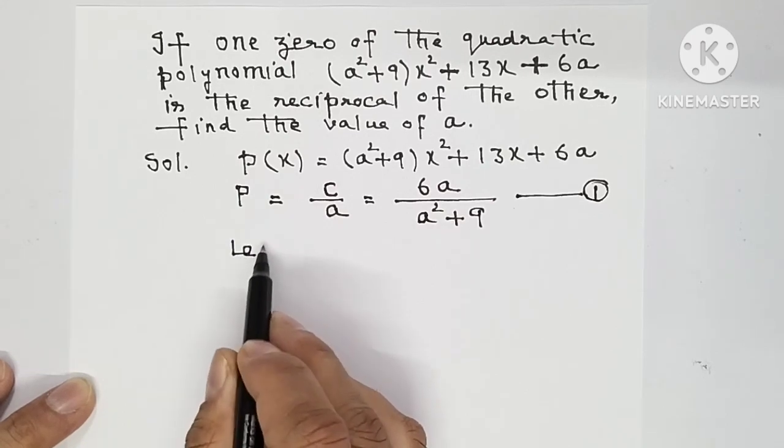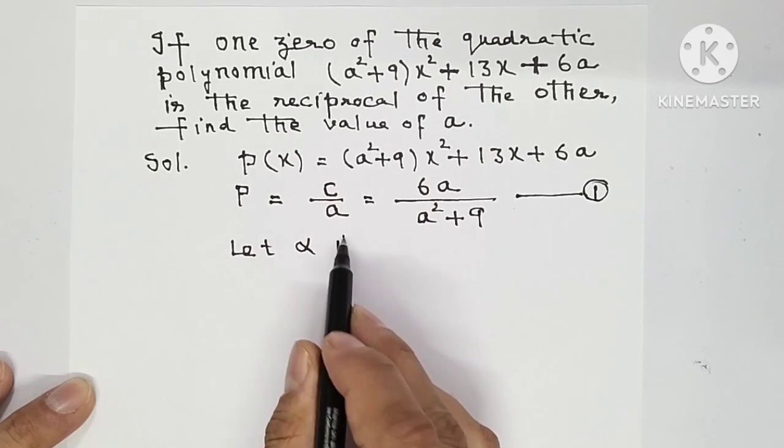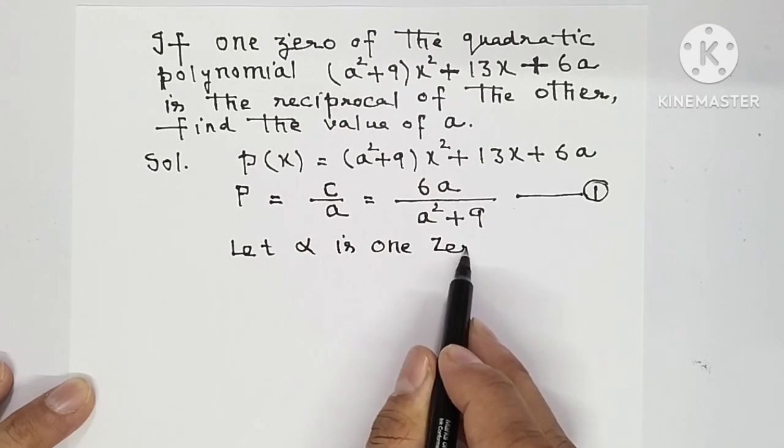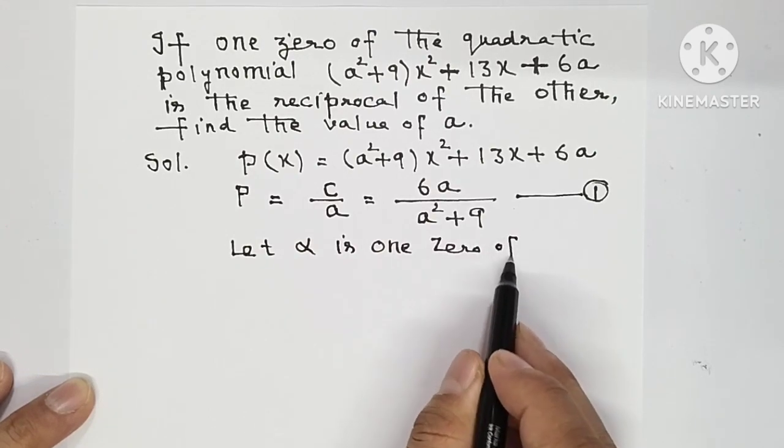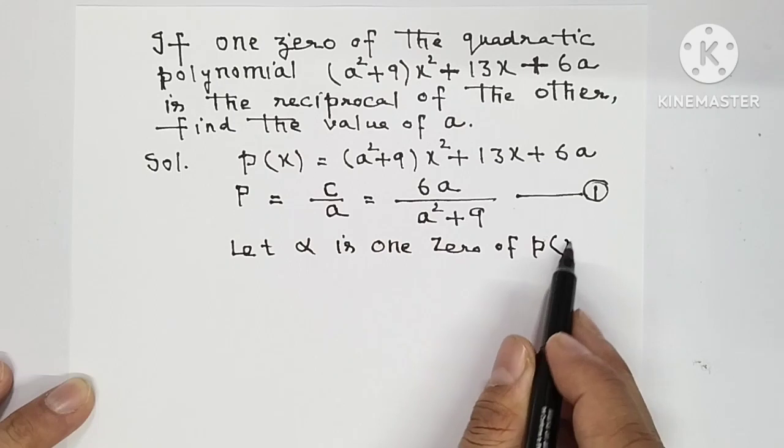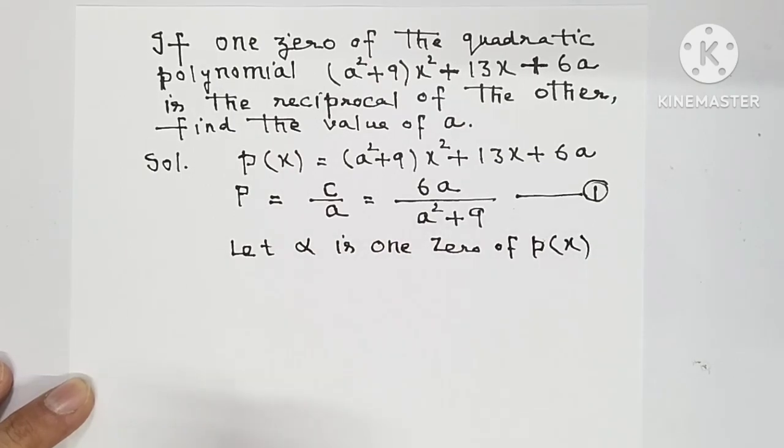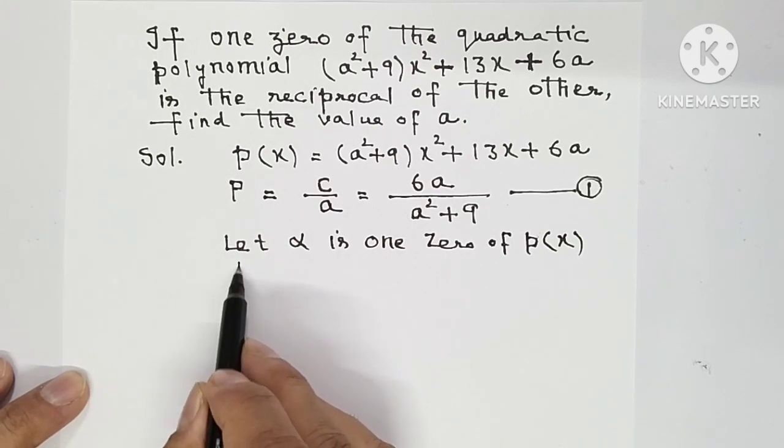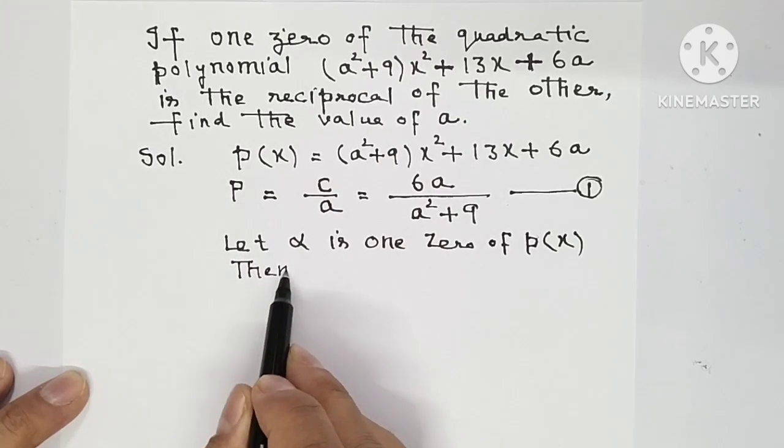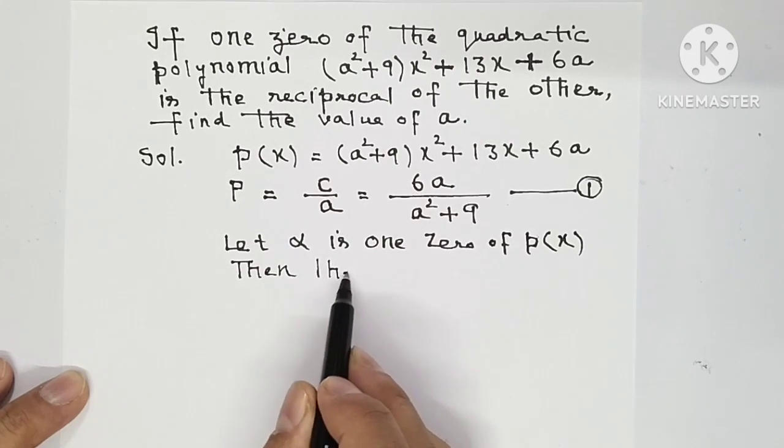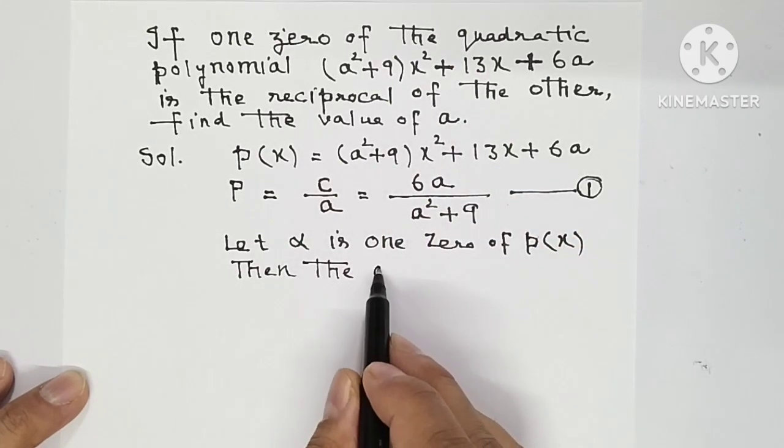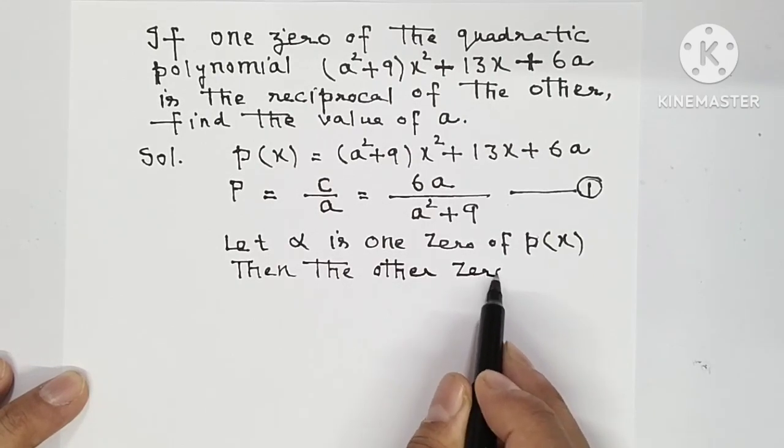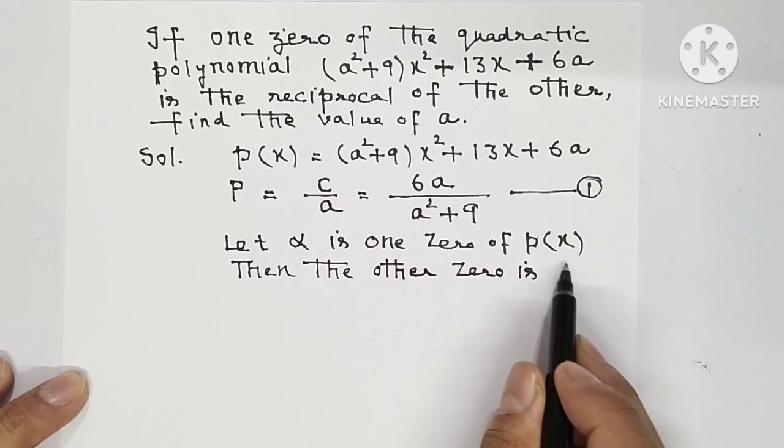Let α is one zero of polynomial P(x). So what we have is α is one zero of the polynomial. Then the other zero is its reciprocal.